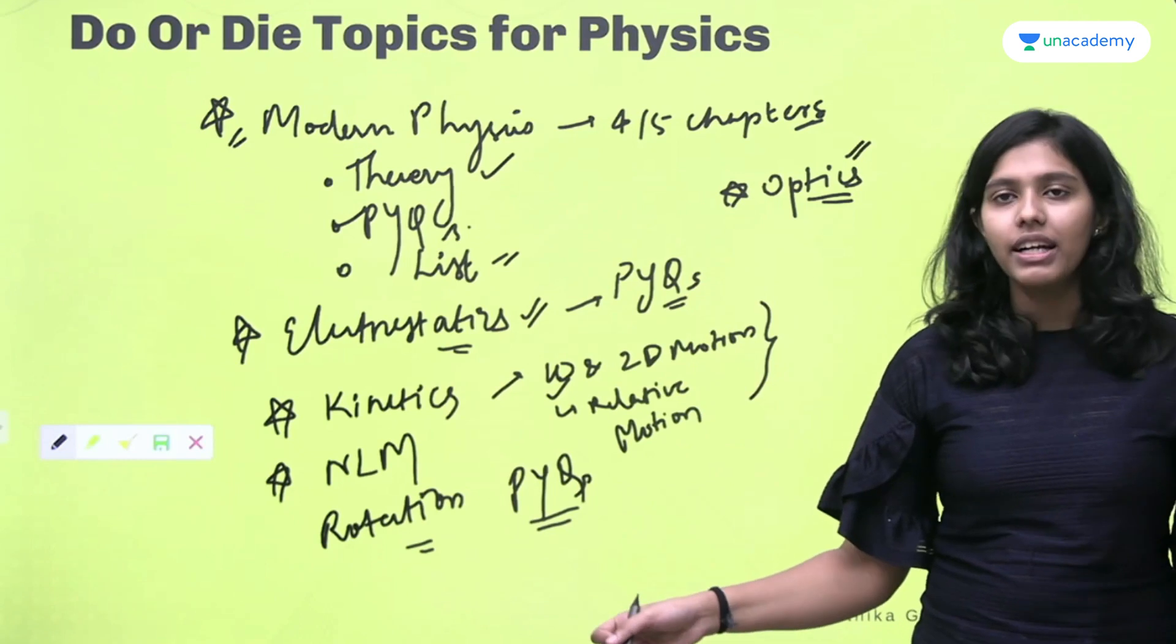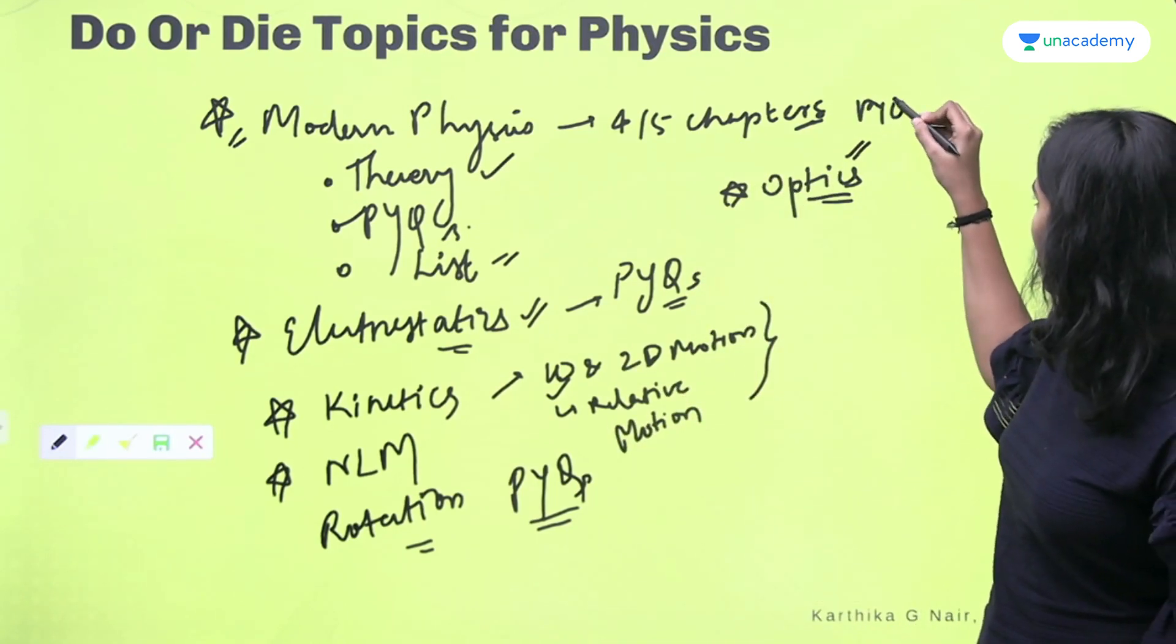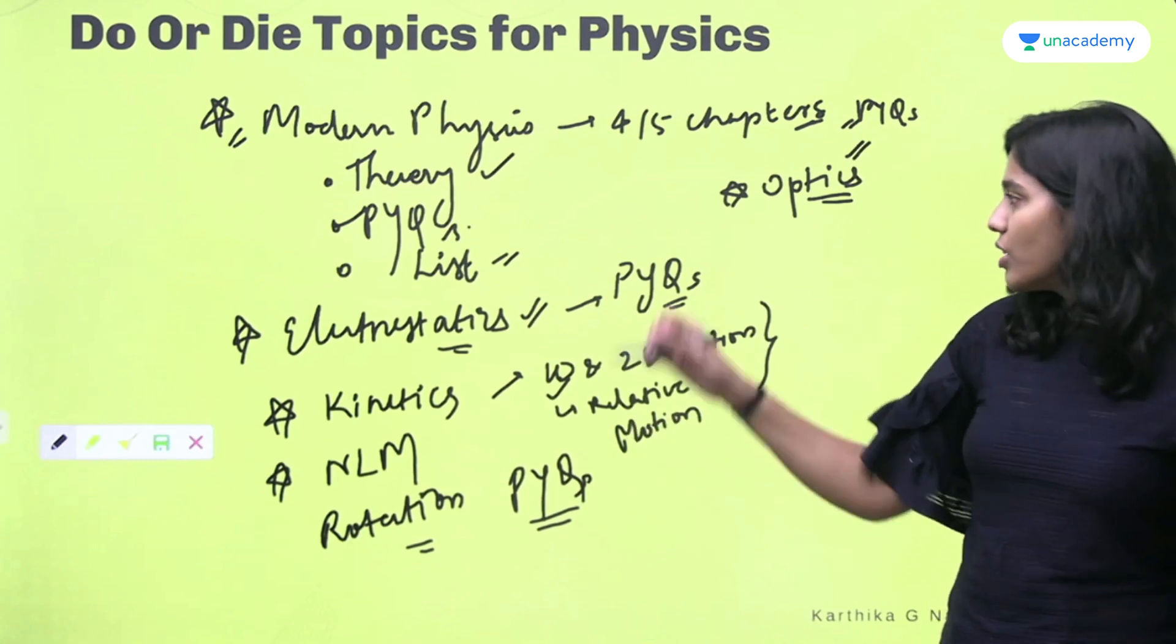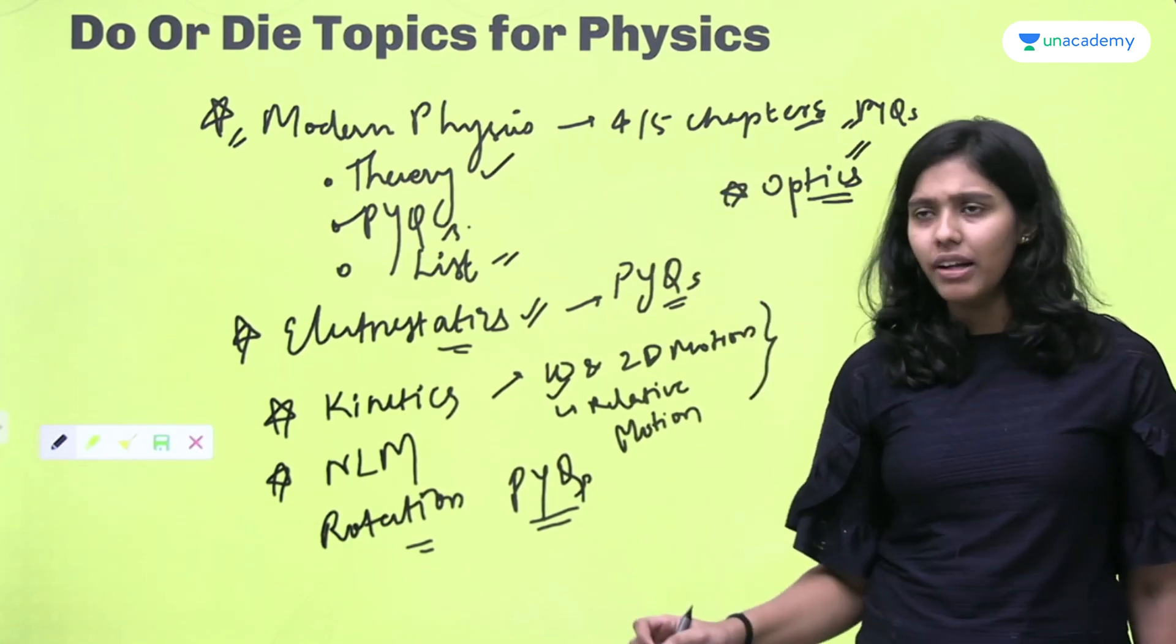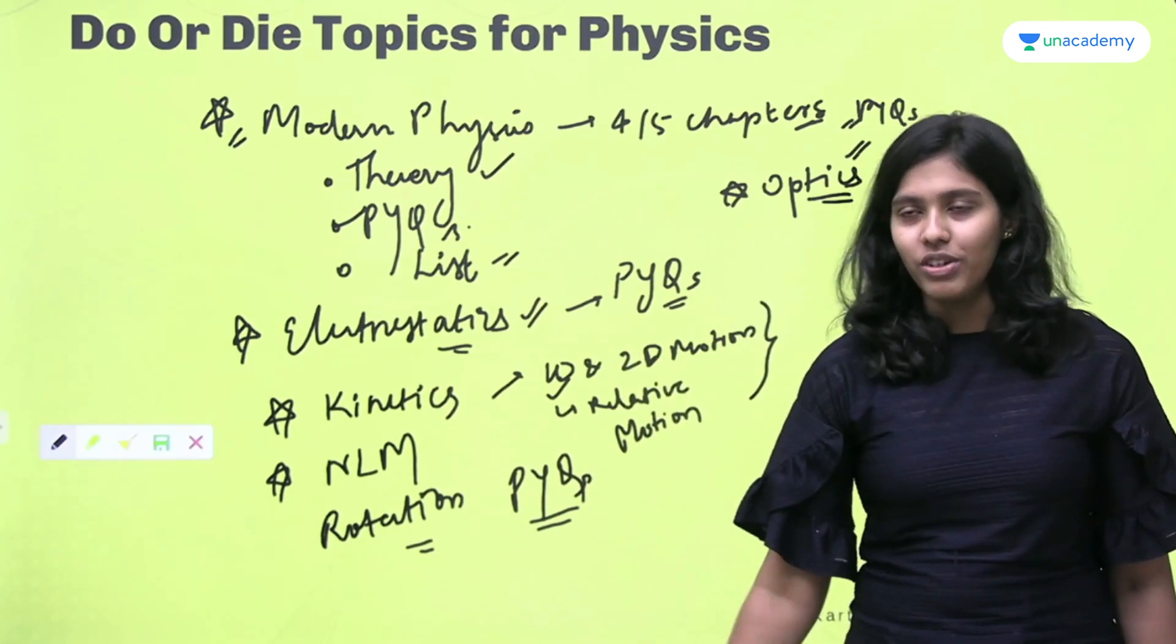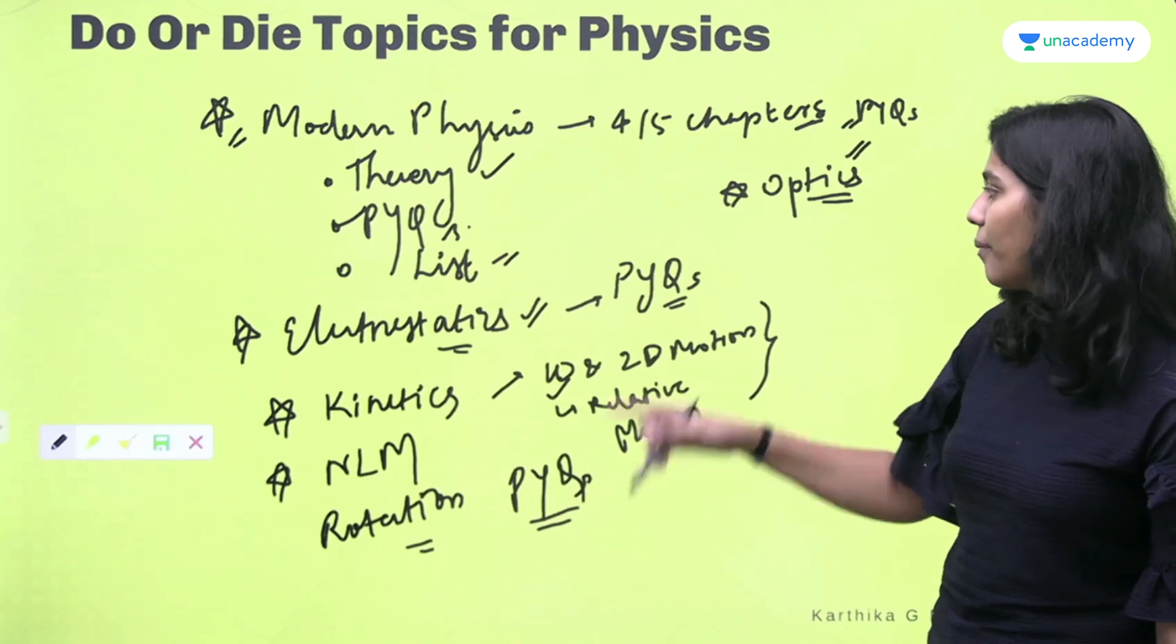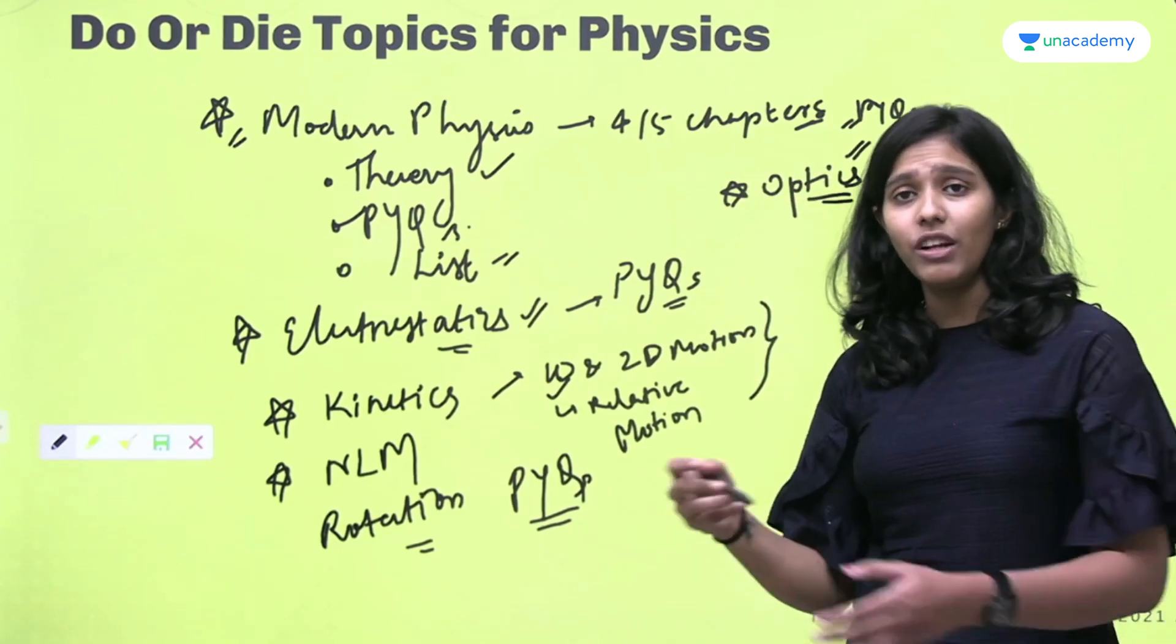Optics, you cannot skip optics entirely, but you must solve previous year questions again in optics and try to understand the theory well. If you get a grasp of the theory, then any topic can be done. So these are the topics as per me that should be done, must be done on priority. Now that doesn't mean that you do not do the other topics. Obviously you must do the other topics as well, but these topics are to be done on priority. So first complete these topics, revise these topics again and again, and then go for the remaining topics.